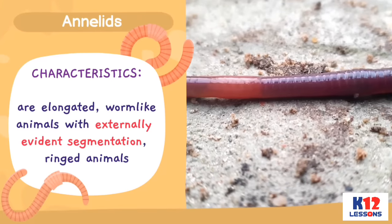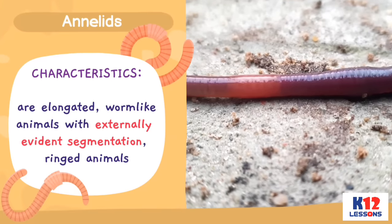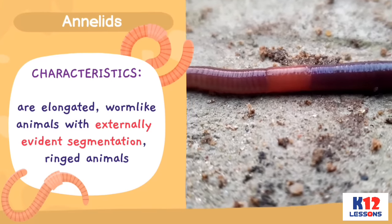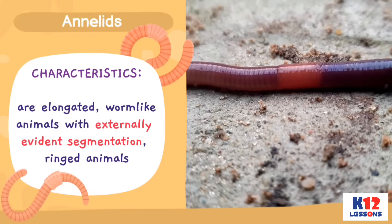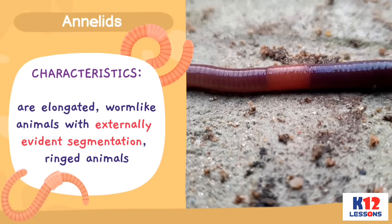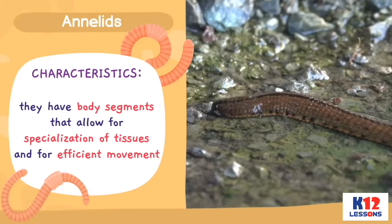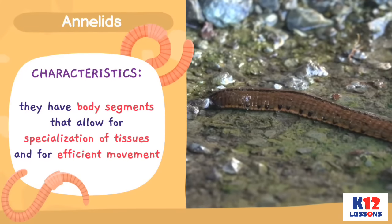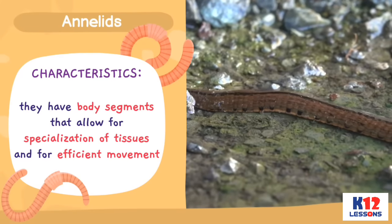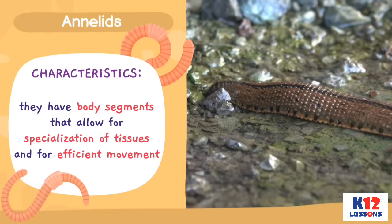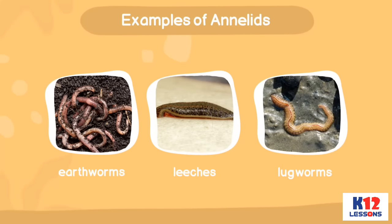Annelids: Annelids are elongated, worm-like animals with externally evident segmentation. They have body segments that allow for specialization of tissues and for efficient movement. Examples of annelids: earthworms, leeches, and lugworms.